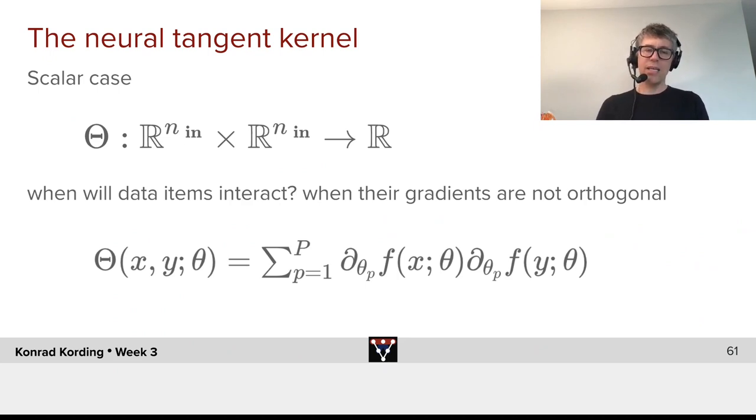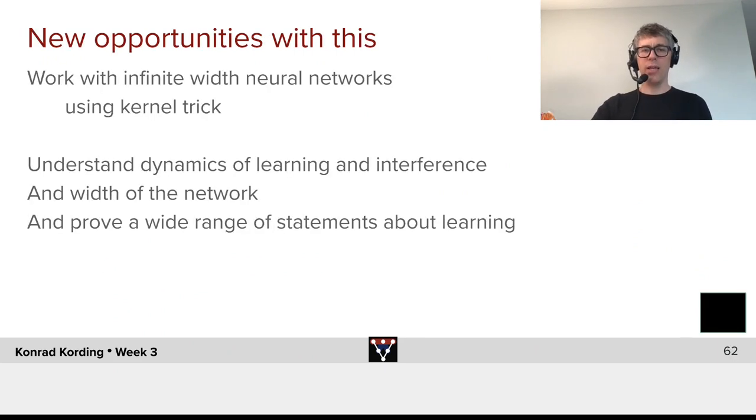So, we can now say that the kernel is the gradient with respect to theta of f of x times the gradient of f of y. We have those two. And now with these, we have a defined influence between the two of them, which allows us to reformulate the learning.